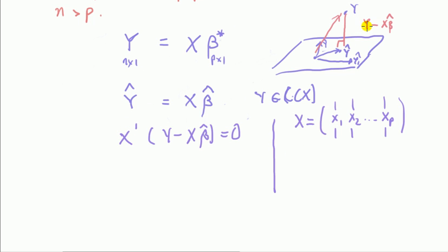It's because, since this vector here is orthogonal to the space span by X, by definition, the inner product of this guy, Y minus X beta hat, and the inner product with any of these X's must be zero.